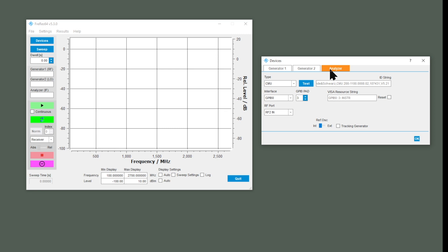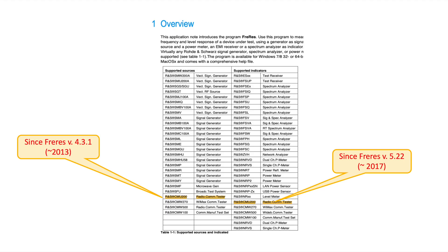In version 5.30, the manual from 2017 lists the CMU for both as a source and as an analyzer. However in earlier versions it's not always there. The CMU was added as a source only from version 4.3.1 around 2013, and as an analyzer only from version 5.22 around 2017. That's quite late given the CMU is a fairly old device. In the latest manual they do go into quite some detail about the specific use of the CMU.